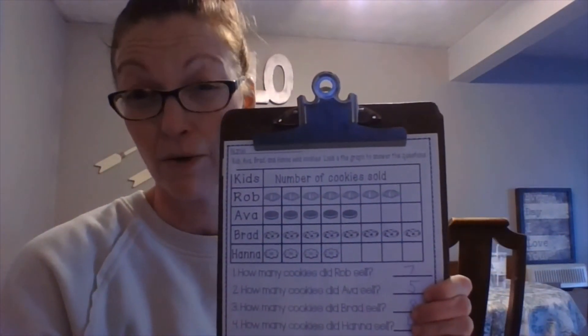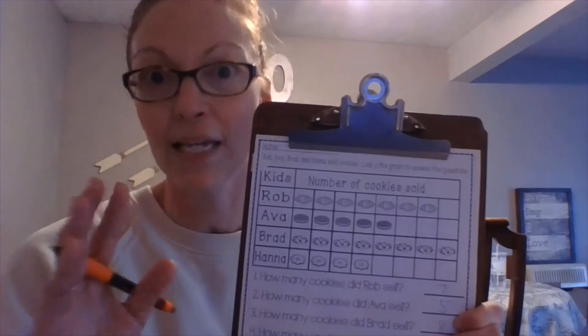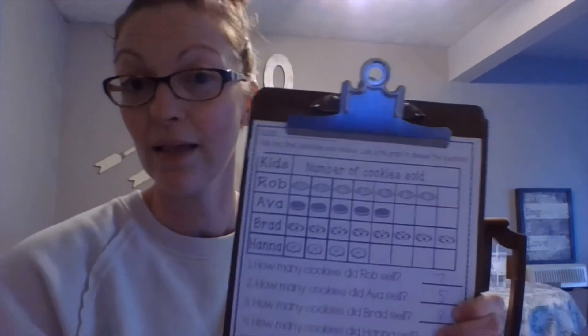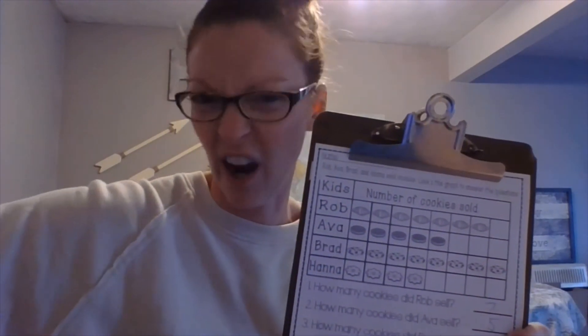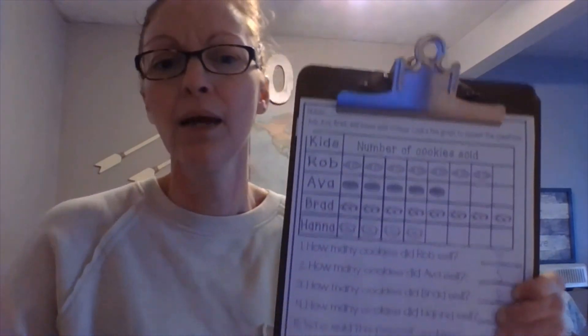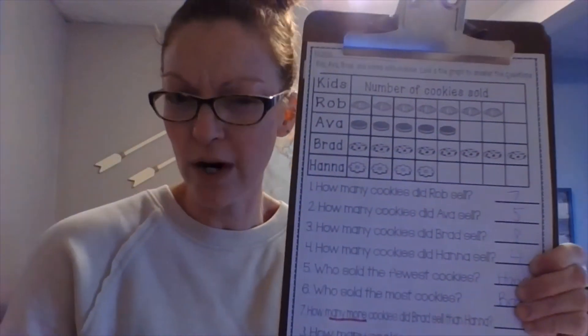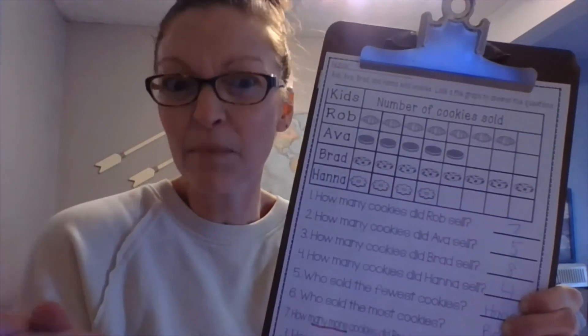This is tricky now — you ready? Because this is the hardest part of graphing. Don't tell any teacher I told you that. This is the tricky part. How many more cookies did Brad sell than Hannah? I'm going to show you a trick. These are tricks that make it so easy. The key phrase 'how many more' means we have to figure out the difference, kind of like subtraction, between Brad and Hannah.